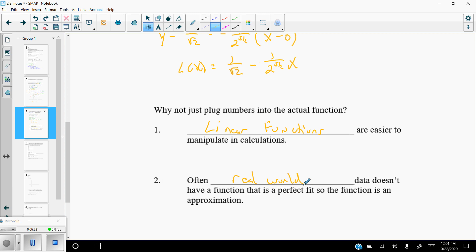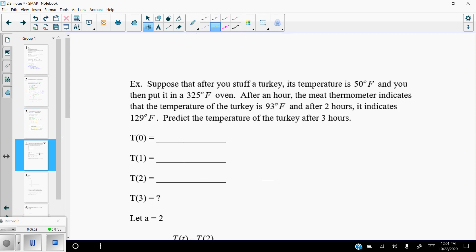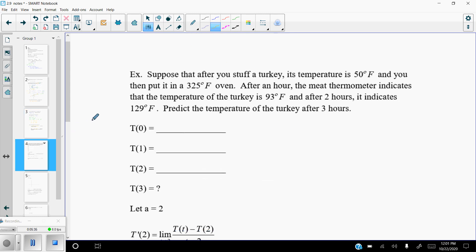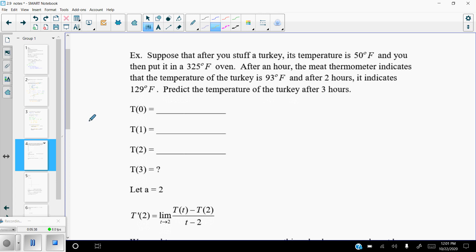So let's go ahead and take a look at our next example. We're getting closer to the end of October here, or it may already be November, depending on when we're actually getting to this. So this is kind of apropos. Suppose that after you stuff a turkey, its temperature is 50 degrees Fahrenheit, and you then put it into a 325 degree Fahrenheit oven. After one hour, the meat thermometer indicates that the temperature of the turkey is 93 degrees Fahrenheit, and then after two hours, it indicates it's 129 degrees Fahrenheit.